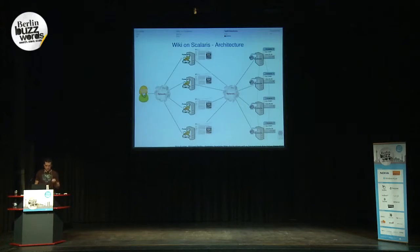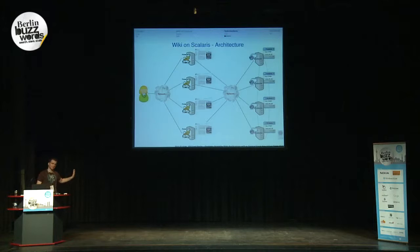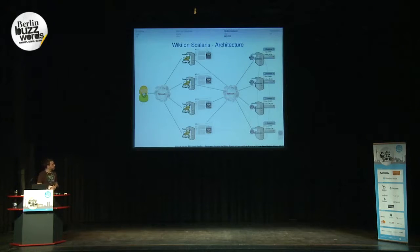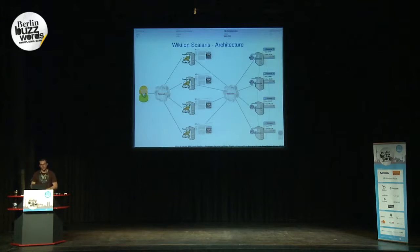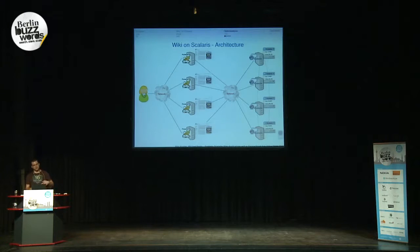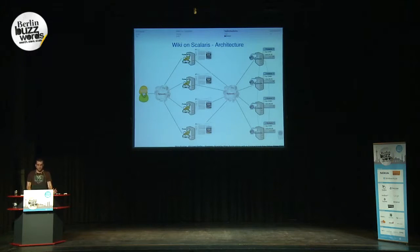This is the application architecture we designed: the user requests a page from a web server such as Tomcat. Those Tomcat instances are connected to any Scalaris node. Scalaris could be hundreds of nodes connected with each other, and Tomcat just requests data from one of them — which will serve the data, even if it is stored on a different node.